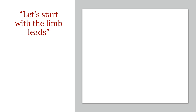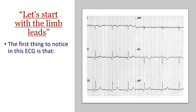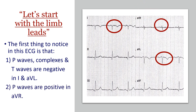Let's start with the limb leads and have a close look. The first thing you'll notice in this ECG is that the P waves, the complexes, and the T waves are all negative in lead I and AVL, which is abnormal. The P waves are positive in AVR, and lastly there is a right axis deviation.